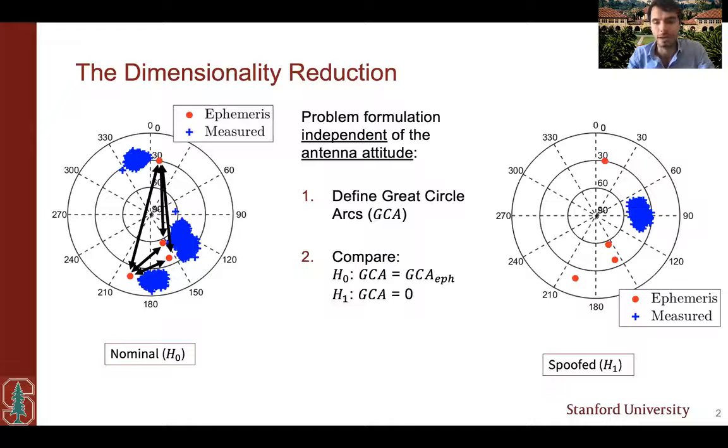This leads to about two to ten times improved detection performance in terms of missed detections, depending on the satellite geometry and the antenna measurement accuracy.